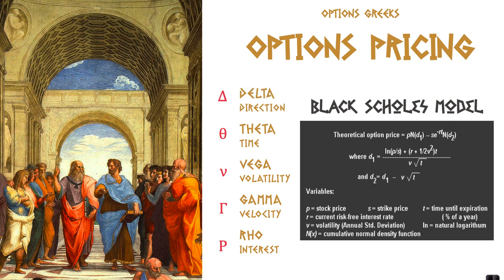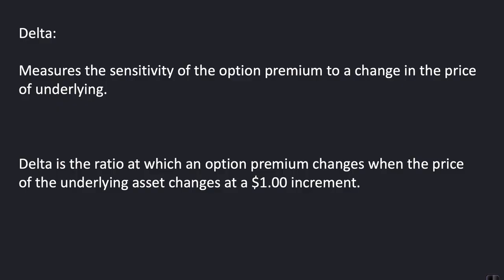Of course, we're going to focus here on Delta because that's the theme of the video. Delta measures the sensitivity of the option premium to a change in the underlying asset price — up or down. That's where we get Delta for direction: it measures the sensitivity of the option premium to the change in the asset price up or the asset price down.